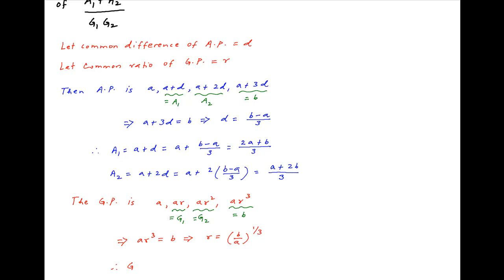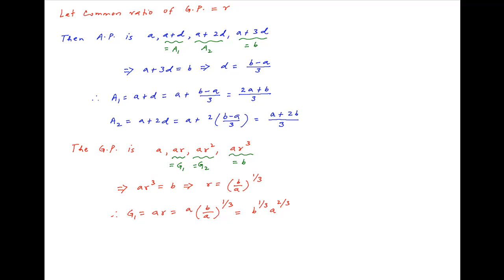Therefore, the geometric means are g1, which is equal to a times (b upon a) raised to the power 1 upon 3, which simplifies to b raised to the power 1 upon 3 times a raised to the power 2 upon 3.